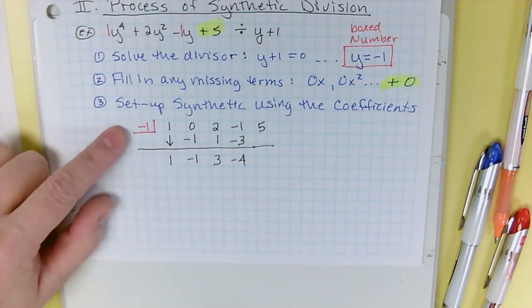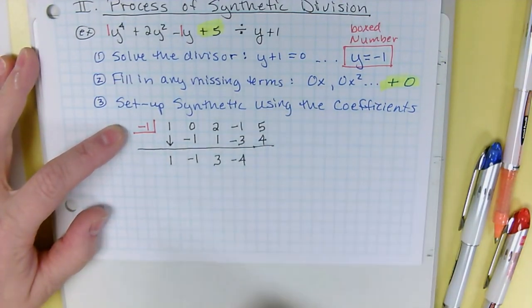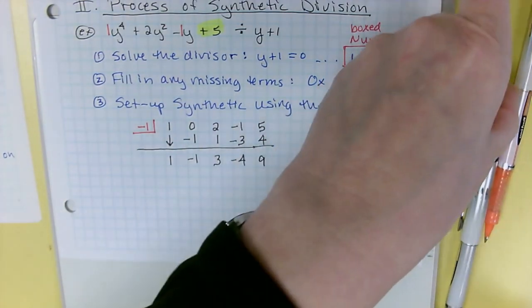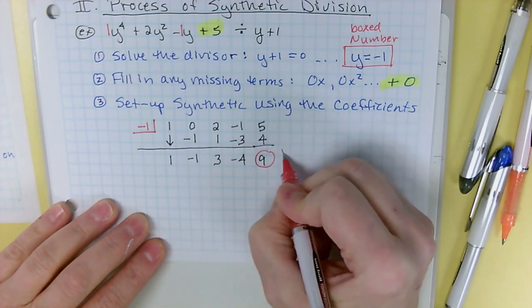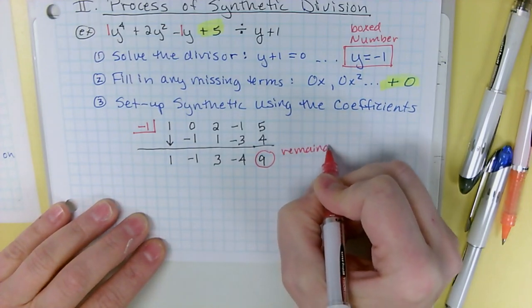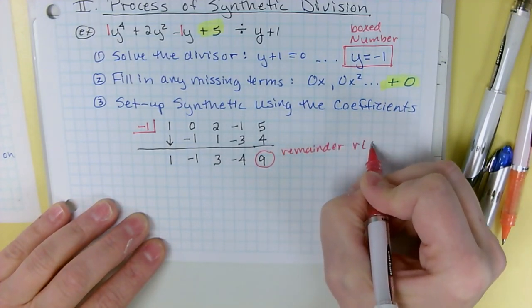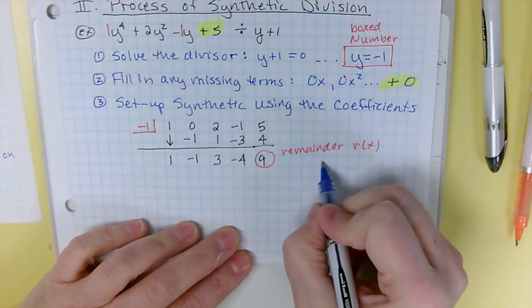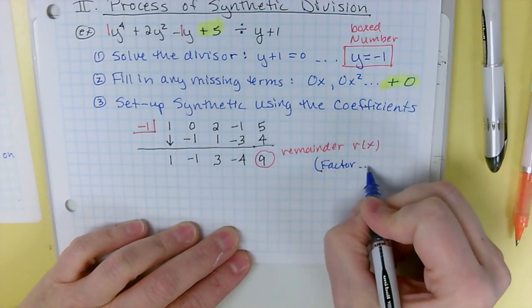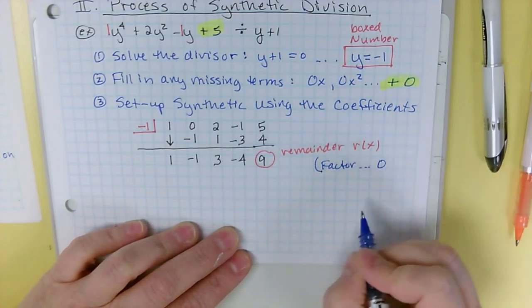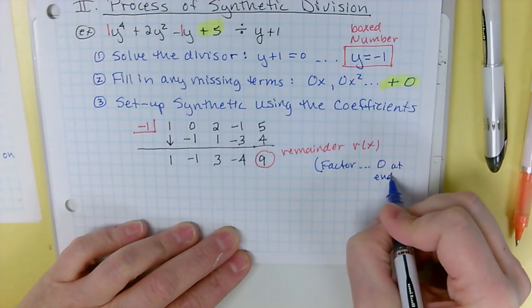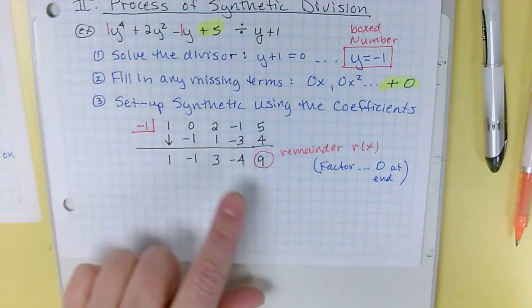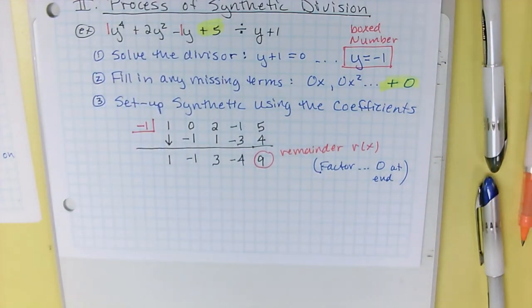Last time, -4 times -1 is positive four. Put it under the last number. Five plus four is nine. Whatever your last number is, that is your remainder or your r of x. So if this is a factor, then you should get a zero at the end, if it's a factor, because you should have a zero remainder. This is obviously y + 1 is not a factor because I have a remainder.